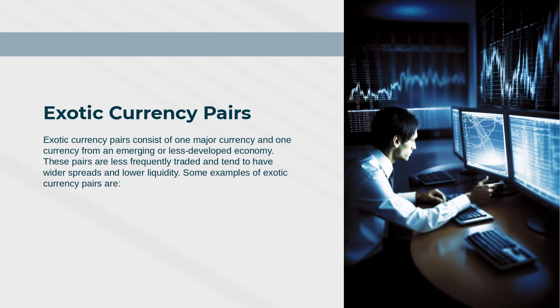Exotic Currency Pairs consist of one major currency and one currency from an emerging or less developed economy. These pairs are less frequently traded and tend to have wider spreads and lower liquidity.